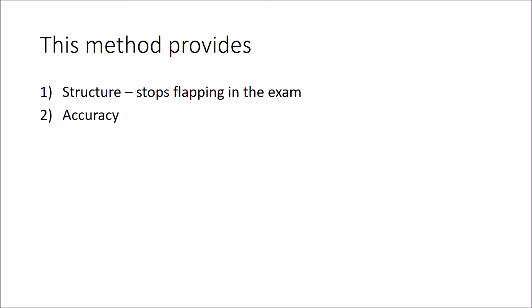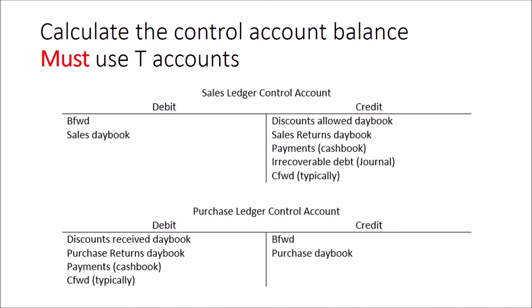The four-step process provides structure - you know exactly what's going to happen when a reconciliation question comes up - and it's accurate, removing reliance on mental arithmetic. This is probably the second hardest question in the exam, alongside or just after suspense accounts, so having a systematic approach really improves performance.